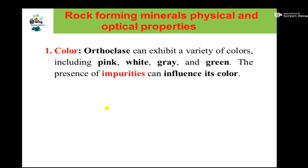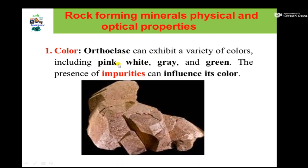The first physical property used to distinguish orthoclase from other minerals is color. Orthoclase can exhibit a variety of colors: pink, white, gray, and green. The most common color identification of orthoclase is pink. Most of the time, orthoclase exists in pink. The change in color in orthoclase is due to impurity, which is a main cause for a change in color.